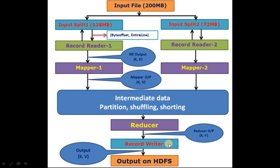Record Writer reads the reducer's output and writes it to HDFS. The output of Record Writer is also in key-value pair format, written onto HDFS. So when there is an input file, Hadoop reads it and writes the processed output to HDFS — this is the simple overall process.